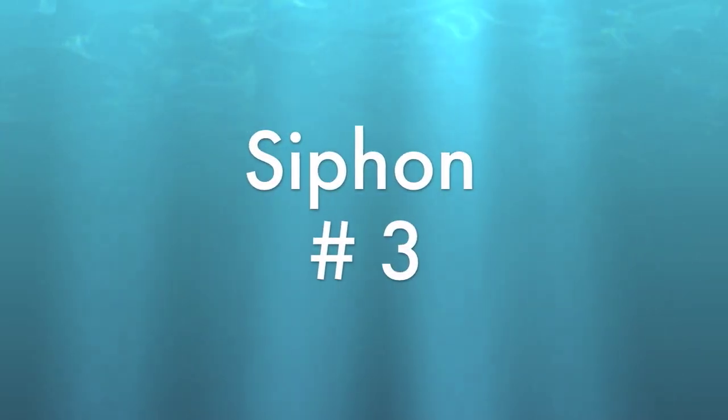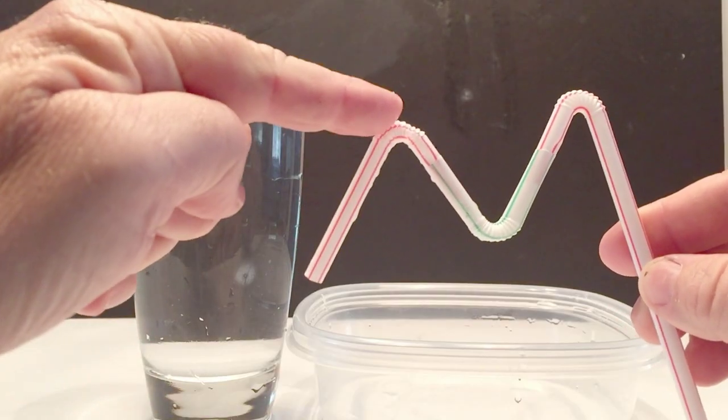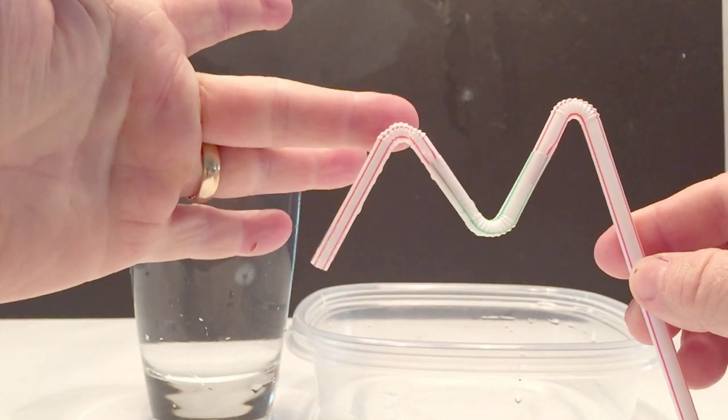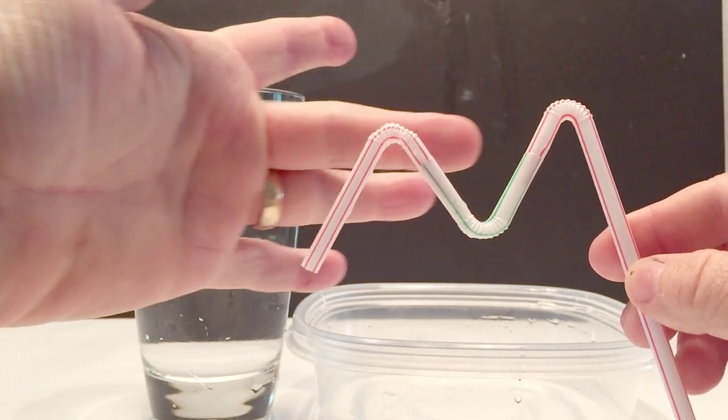The third siphon is a completely self-starting siphon. No finger or mouth sucking on it. It's an M-shaped straw, which I'll show you later how to make, where the first hill in the M is lower than the second hill in the M, as you can see with my fingers there.